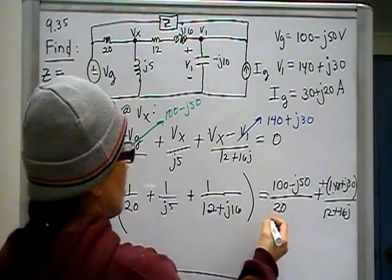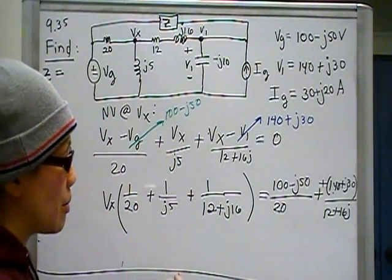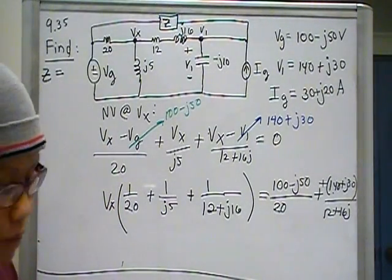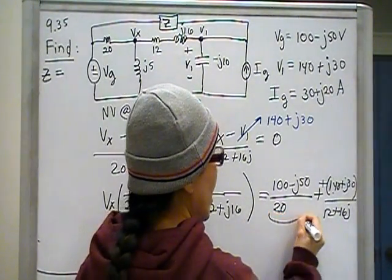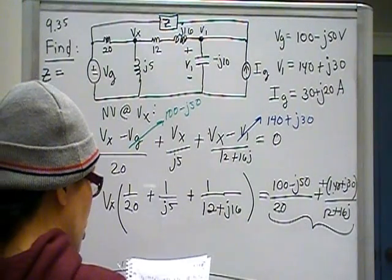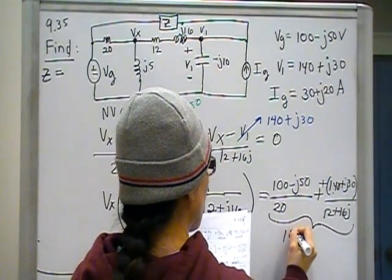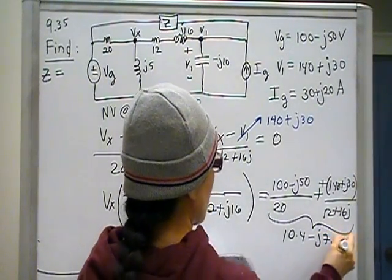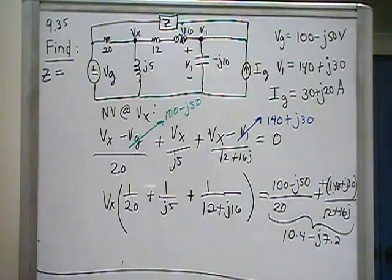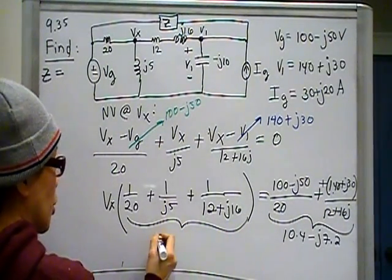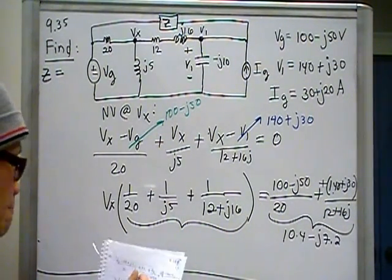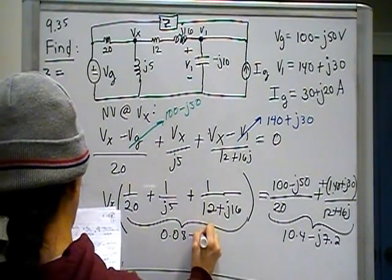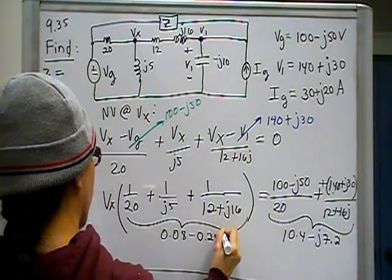Now this I claim, I had to do this piece by piece, like adding it one piece at a time just to get it accurately. This, when you add these two numbers together, you should get 10.4 minus j7.2. When you add these three fractions together, you should get 0.08 minus 0.24j.